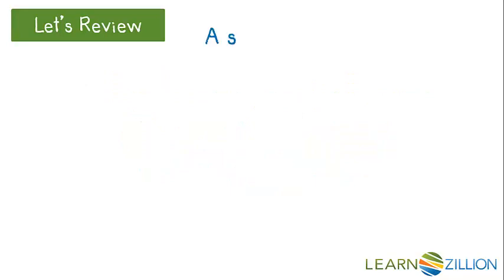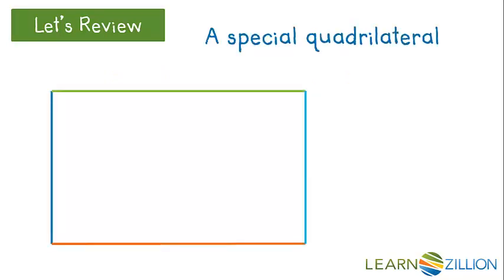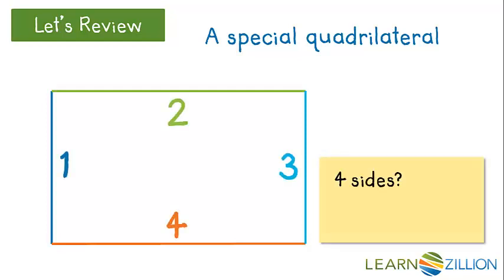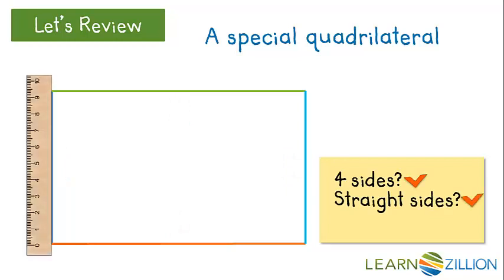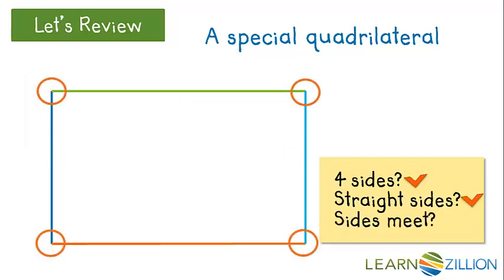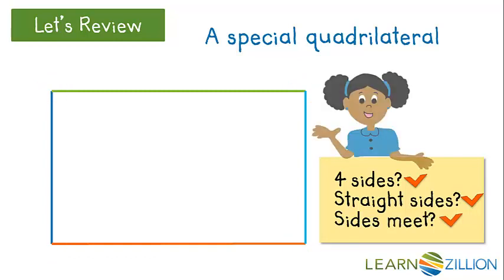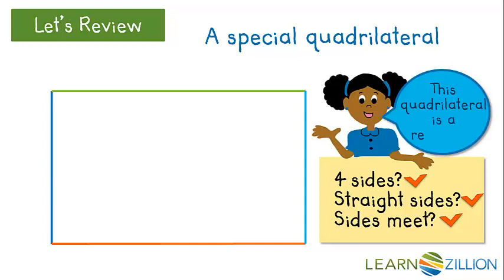Let's review. We learned about a special quadrilateral called a rectangle. We know that this shape is a quadrilateral because it has four sides, each of the sides are straight, and all the sides meet at a corner or vertex making a closed shape. This quadrilateral is called a rectangle because the top and bottom have the same length sides that run in the same direction, the same distance apart.